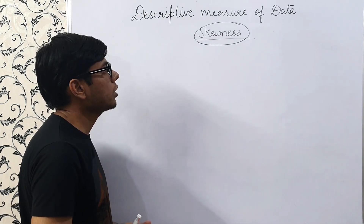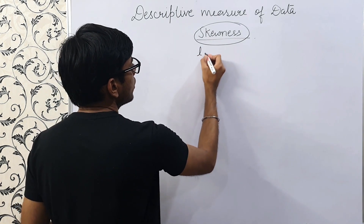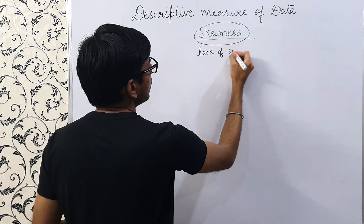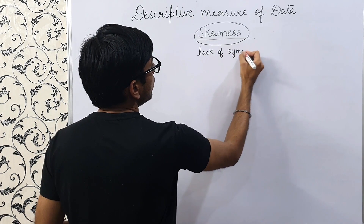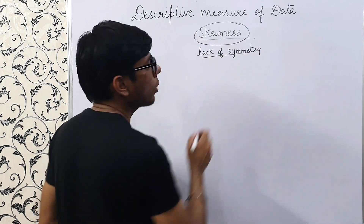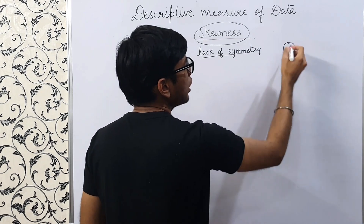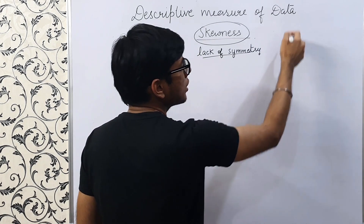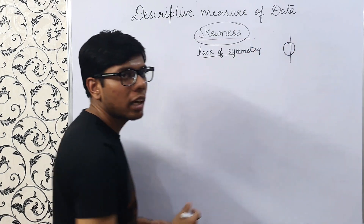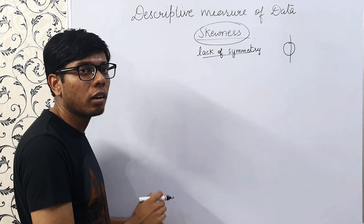Now let's start skewness. What does that mean? In simple terms, it is lack of symmetry. What does symmetry mean? That it is same on both sides. Suppose the letter O — if I draw this line of symmetry, it is same on the right side and same on the left side. So this is a symmetrical letter.